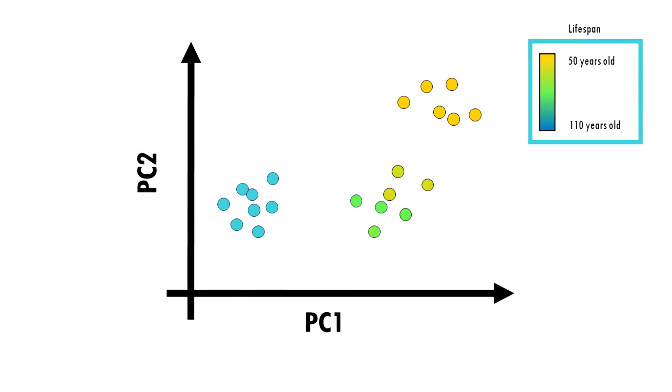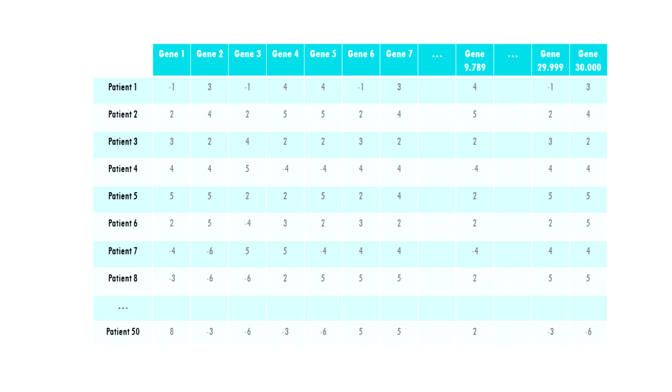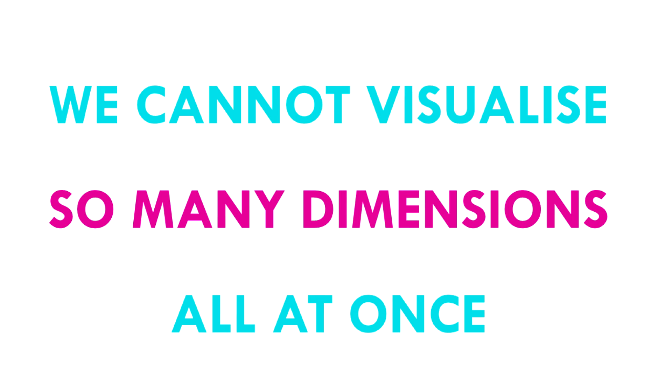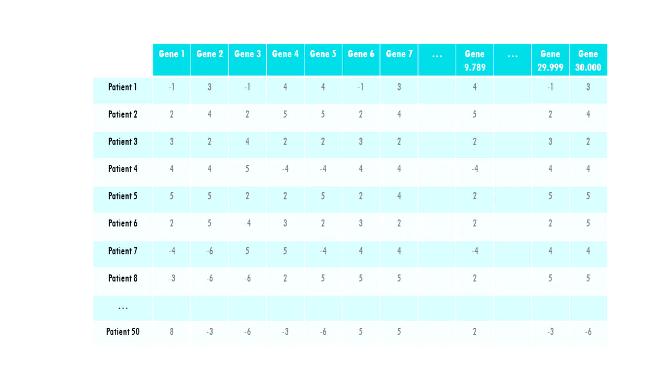So back to our PCA plot. How do we use this to draw conclusions from our dataset? Let's have a look at this other example. We have data from the gene expression profile of 50 different patients with lung cancer. And for each patient, we measured the expression of 30,000 genes. We could plot the expression of genes individually across all patients, but we cannot visualize the expression of all genes across all patients all at once. Or can we? To get a general overview of our data, a good place to start is with PCA.